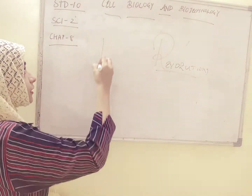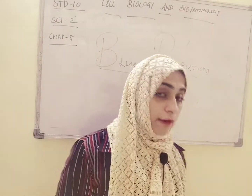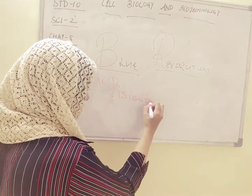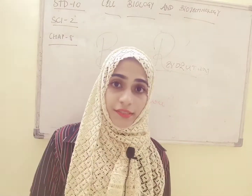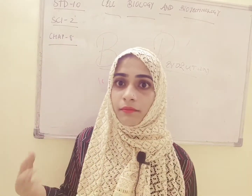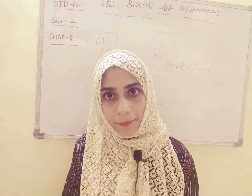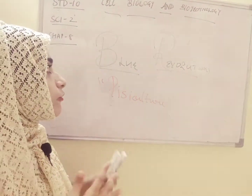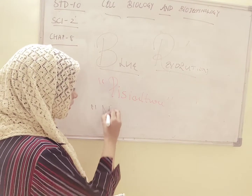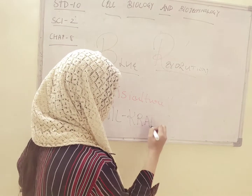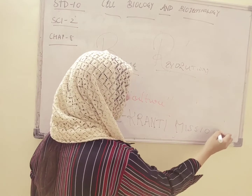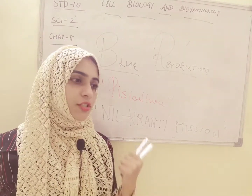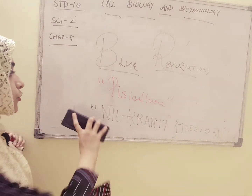Then there is the Blue Revolution. Blue is the color of water, and within water there is aquatic life, so the Blue Revolution is related to pisciculture — the science which deals with rearing of fishes and aquatic life. Fishes have high economic demand in the market. To increase the yield of fishes and produce different varieties, efforts were taken under the Blue Revolution, and the government launched a mission called the Neil Kranti Mission. With this we learned about the Green Revolution, White Revolution, and Blue Revolution — three very important revolutions in Indian history.